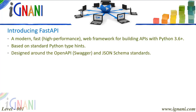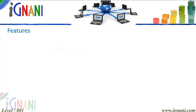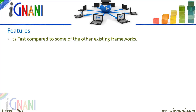FastAPI is designed around open standards — that is, Swagger and JSON Schema standards. It includes two alternative interactive API documentation systems that are generated automatically for Swagger and ReDoc. Security and authentication are integrated without any compromise with database models. Its performance is on par with Node.js and Go, thanks to Starlette and Pydantic, making it one of the fastest Python frameworks available.